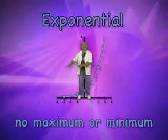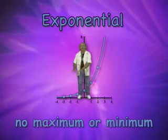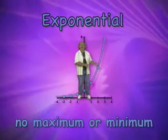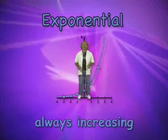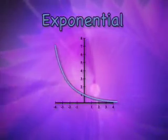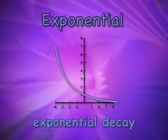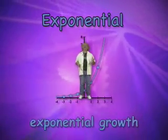Those y values way over to the left are tiny little fractions, but as we move from left to right, those fractions get larger and larger and then become larger whole numbers. So this graph is always increasing, or it increases for all real numbers. Finally, when an exponential function increases, we say it demonstrates exponential growth. If the function is decreasing, then it demonstrates exponential decay. This graph is increasing, so it represents exponential growth.